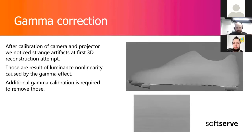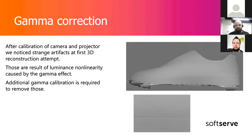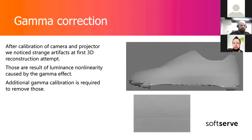Regarding gamma correction: when we tried to make some reconstruction with our board we noticed strange artifacts caused by the non-linearity in the projector luminance. We needed to make gamma correction to account for that. This step is mandatory for our fringe pattern method — not only during calibration but also before reconstruction, as each pattern generated for the projector must account for gamma.